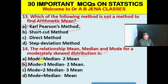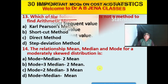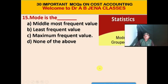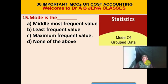Next MCQ: The relationship between mean, median, and mode for a moderately skewed distribution is: Mode = 3 Median − 2 Mean. B is the right option for this MCQ.